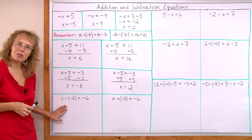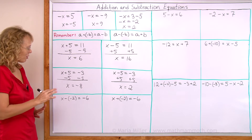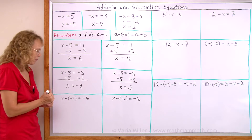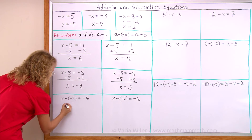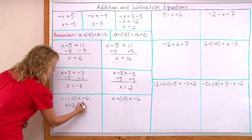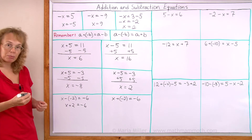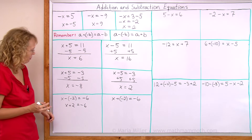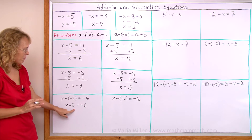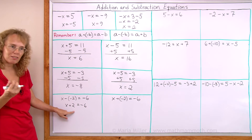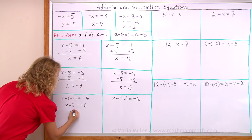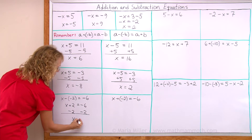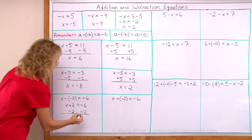Now we have the situation of a double negative. Before solving the equation, I will simplify this side by writing x plus 2 instead. That's just a simplification step — not a step of solving the equation. Now I solve it: there's a plus 2, so I subtract 2 from both sides. That leaves x alone, and negative 6 minus 2 is negative 8.